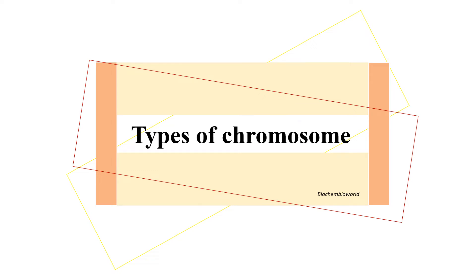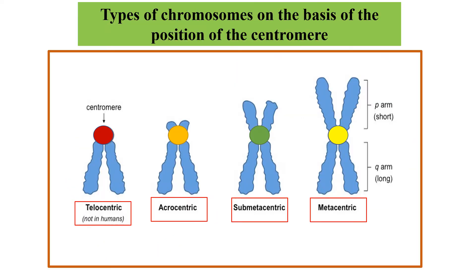Welcome back to my channel Biochem Bio World. Today I'll be discussing the types of chromosomes on the basis of the position of the centromere. Basically, there are four types of chromosomes on the basis of centromere position, and they are telocentric, acrocentric, submetacentric, and metacentric.